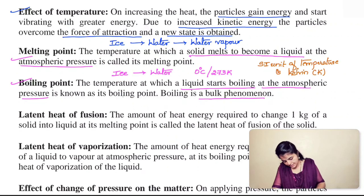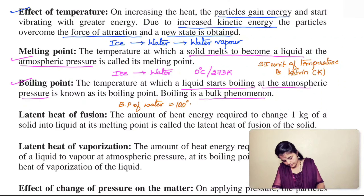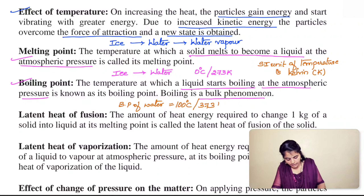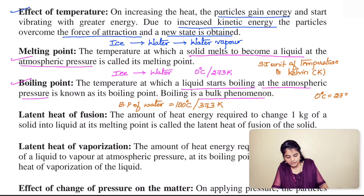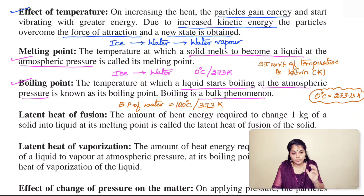The boiling point of water is 100°C, which equals 100 + 273 = 373 K. The exact value of 0°C is 273.15 K, but for simplicity we use 273.